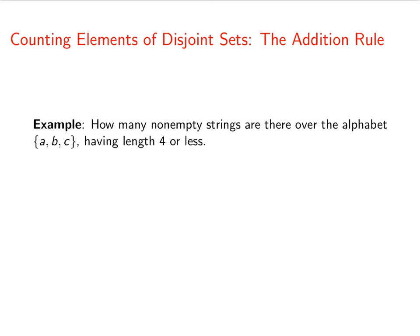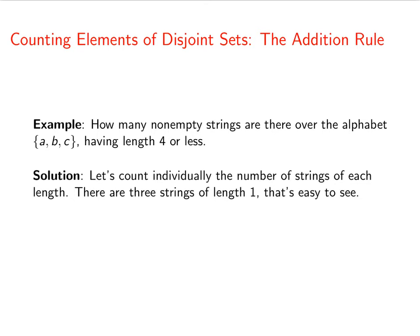As an example, let's think about this. How many non-empty strings are there over the alphabet ABC with length four or less? We'll count individually the number of strings of each length. There are three strings of length one - that's easy because you just have A, B, or C.